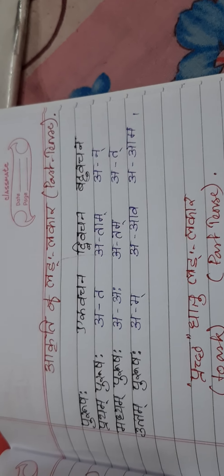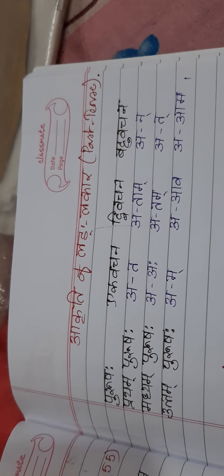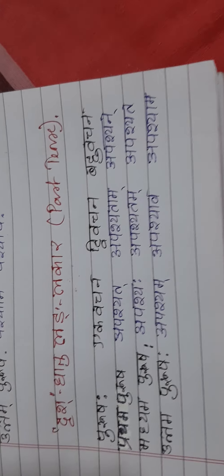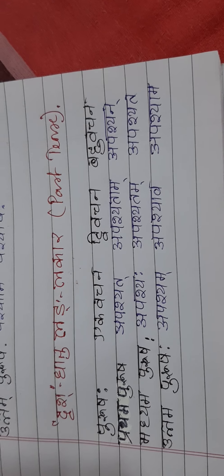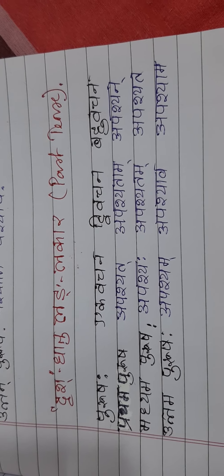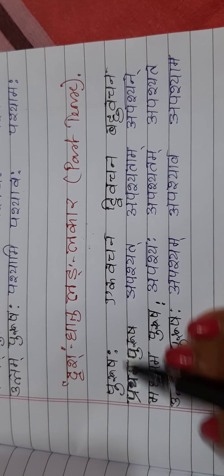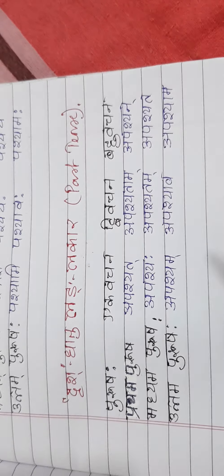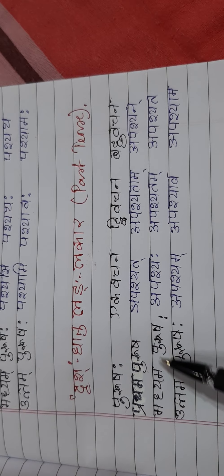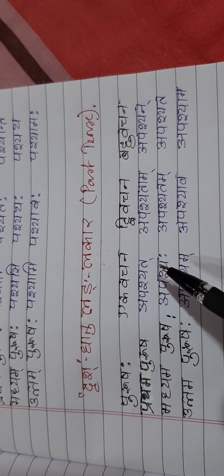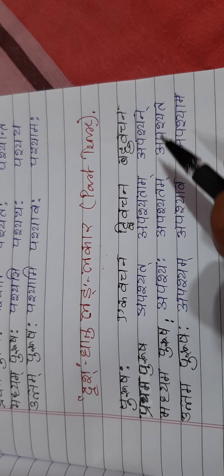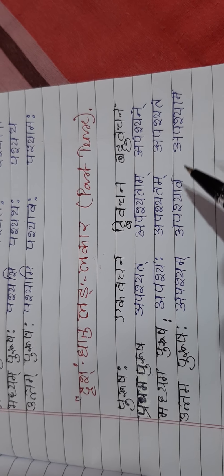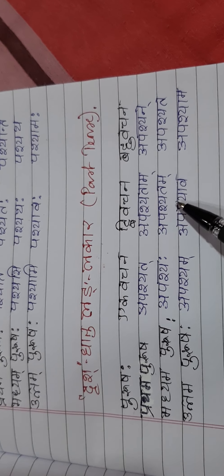Now let's move to Dhrish Dhatu Lunglokar — that is Dhrish Dhatu past tense. Purushaha: Egvachan, Divachan, Bahvachan. Pratham Purusha, Madham Purusha, Uttam Purusha. The forms are: APASHYAT, APASHYATAM, APASHYAN; APASHYAH, APASHYATAM, APASHYATA; APASHYAM, APASHYAVAH, APASHYAMAH.